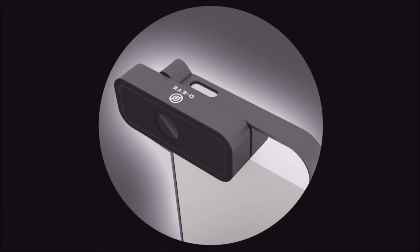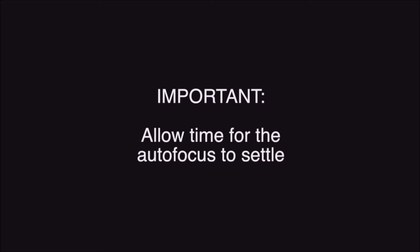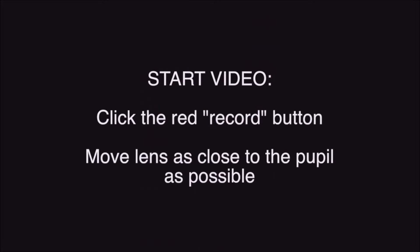Put the lens on if you haven't already and slowly approach the eye. It is very important to practice the following procedures so that the autofocus of your smartphone camera has time to settle and be in focus before you start the exam. The autofocus will begin to adjust as you move closer to the pupil. At about 6 inches from the eye, click the red button to start the video and move the lens as close to the pupil as possible. When you see the red reflex from the eye, the DI has been correctly aligned and focused.